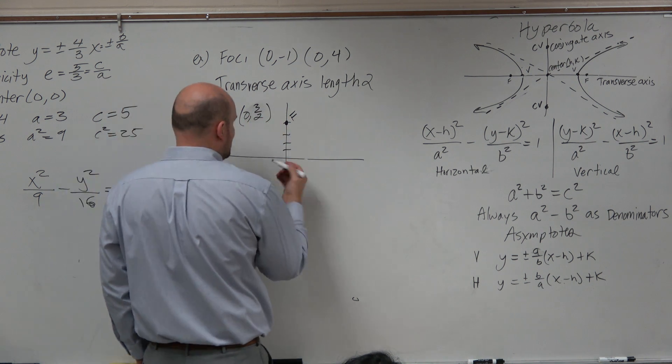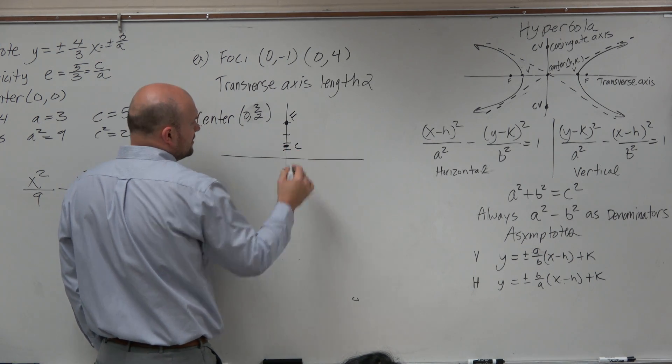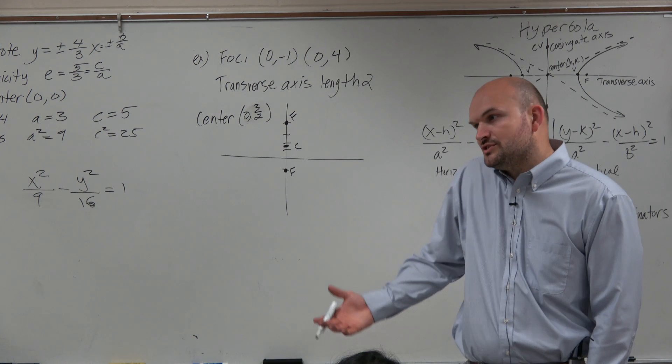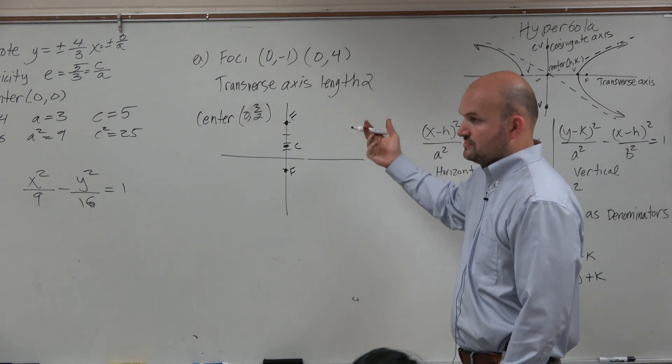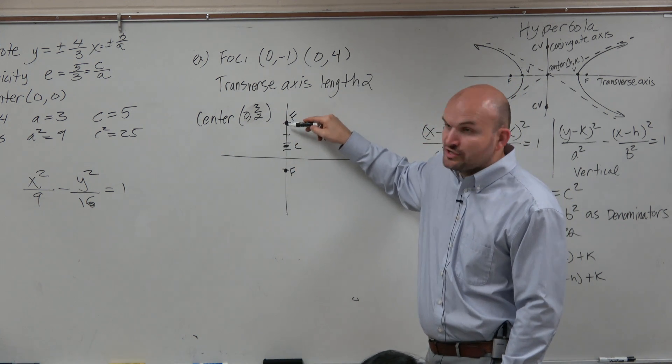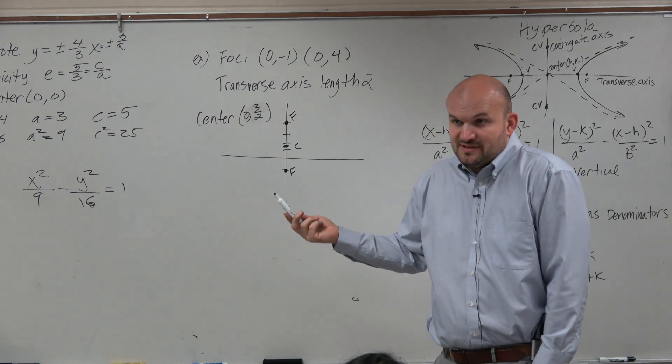Now you could think of 3 halves as like 1.5, right, if you need to. Or we could just use the distance between them to figure out the values. Because we need to figure out the distance from the center to your foci, right, which is c, correct? So we could think about this as 1.5.